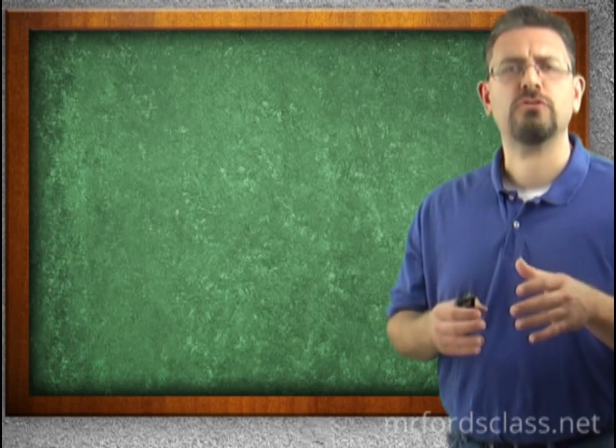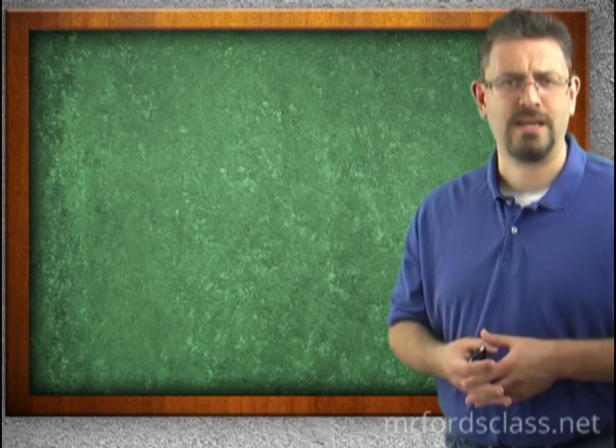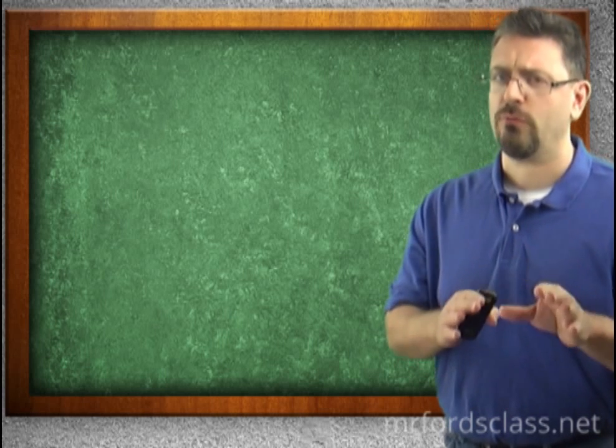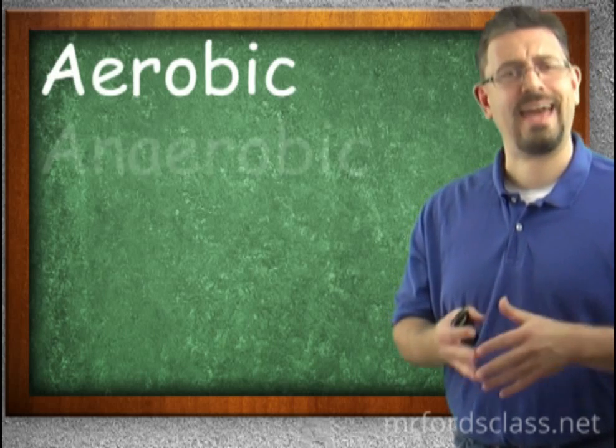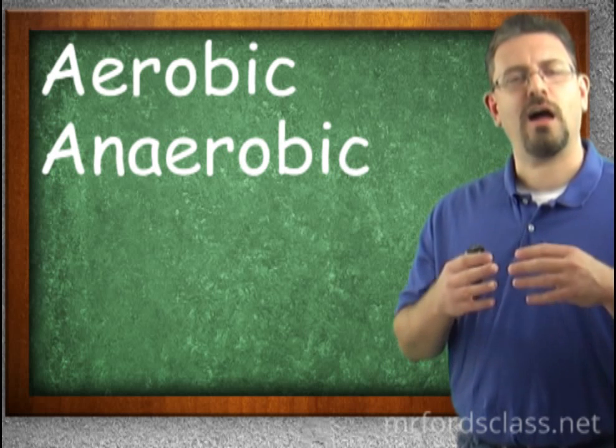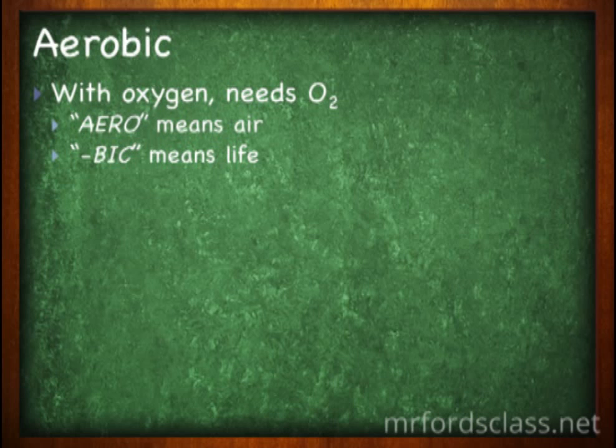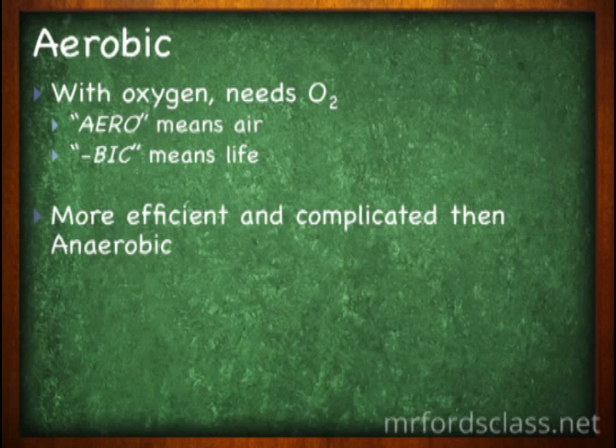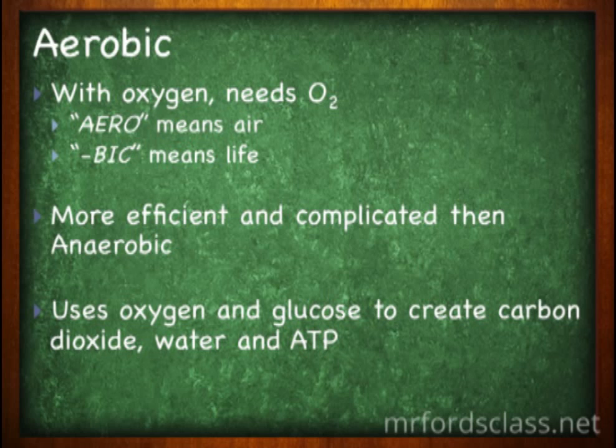We have two basic types of cellular respiration. These are terms that you have heard before. You have heard of aerobic and anaerobic. Aerobic means with oxygen. We have to have oxygen present for aerobic respiration. It is more efficient and more complicated than anaerobic respiration. We use oxygen and glucose and we wind up with carbon dioxide, water, and the energy in the form of ATP.